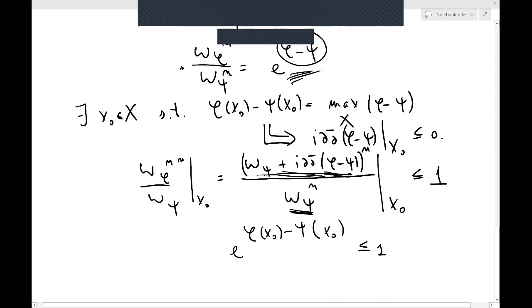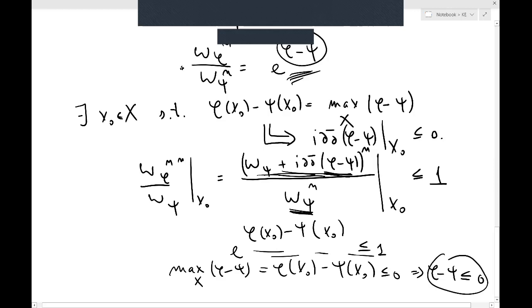So I will get that φ(x_0) minus ψ(x_0) is less than 1, but this was the maximum of φ minus ψ on X, so I will get φ minus ψ is less than, oh sorry, so here is zero because you take the log of this equation. So φ minus ψ has to be less than zero.